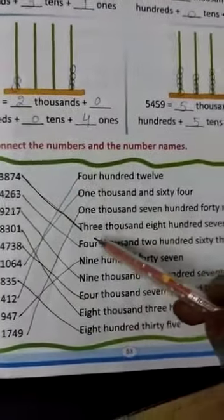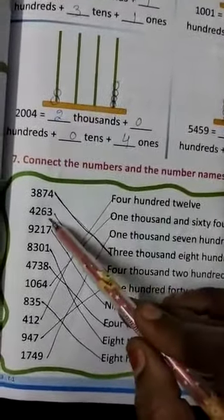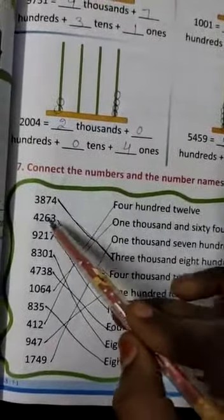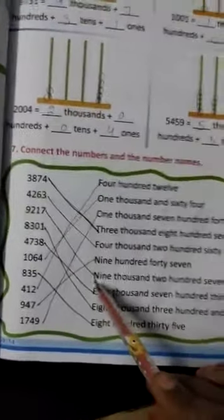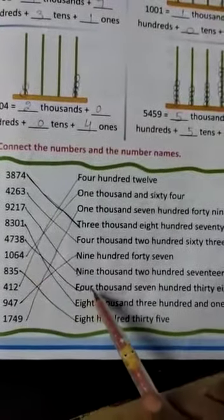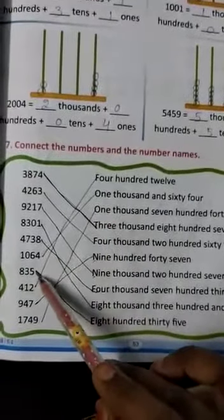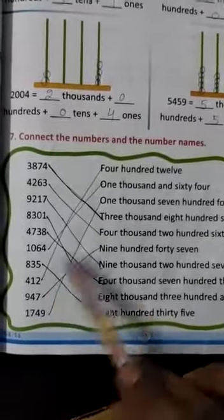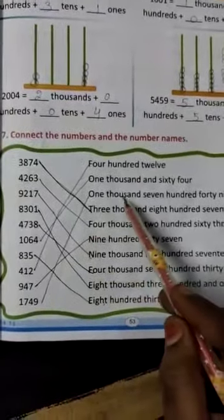Connect the numbers with the number names. 3874, 4263, next 9217, next 8301, 4738, 1064, 835, 412, 947, 1749.